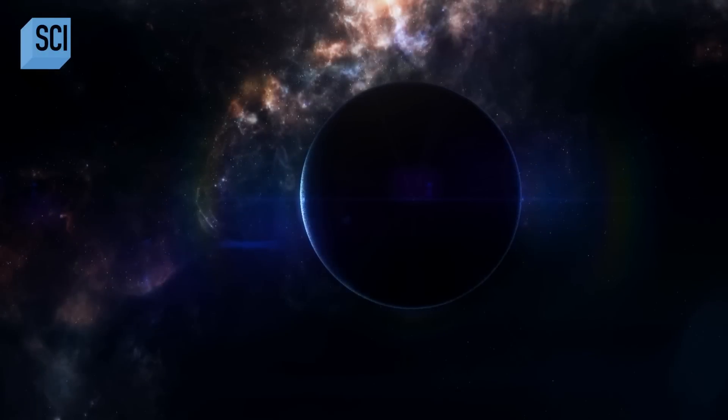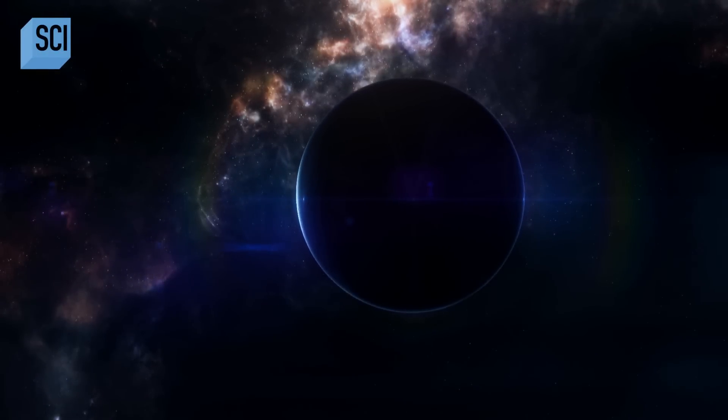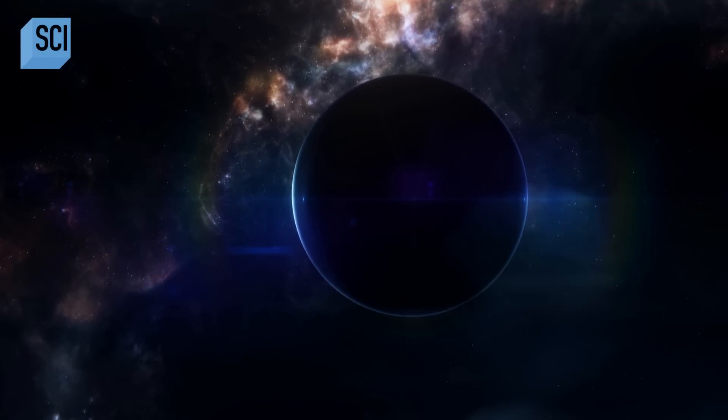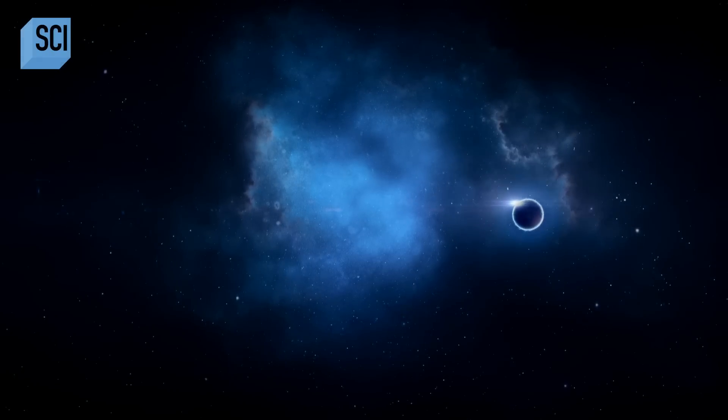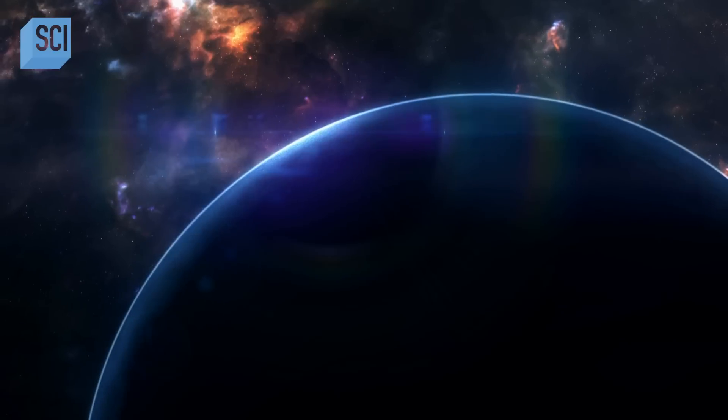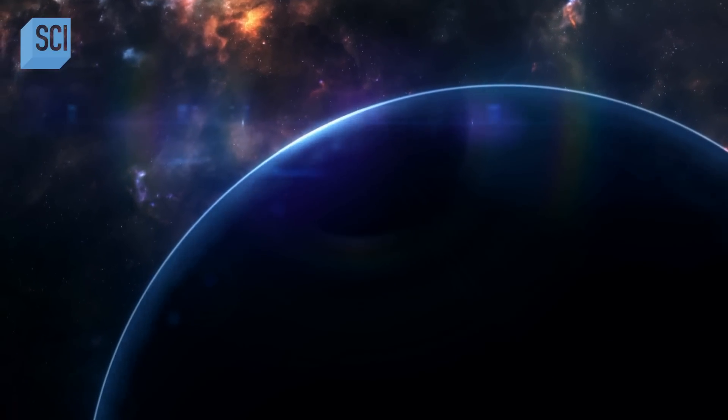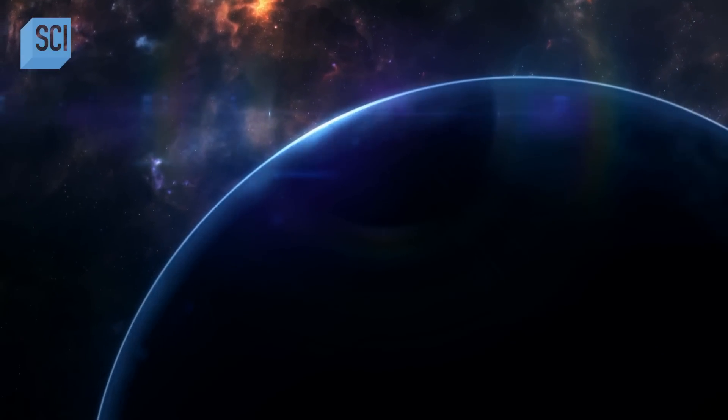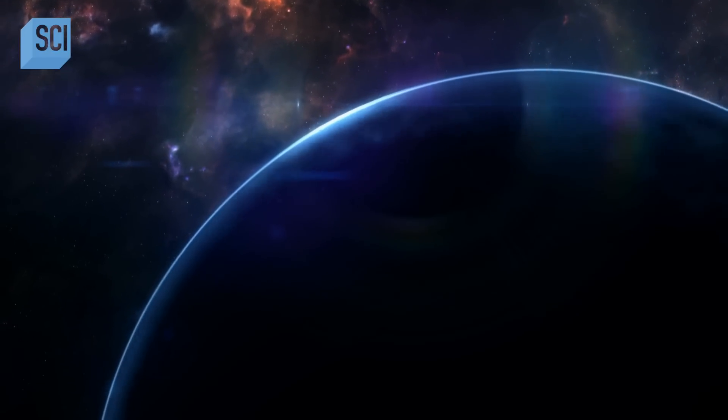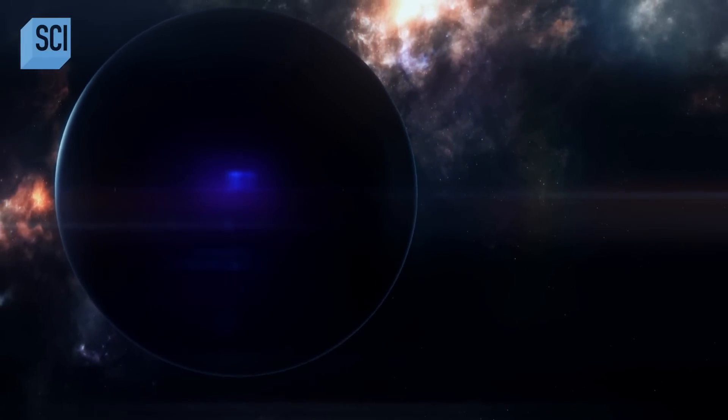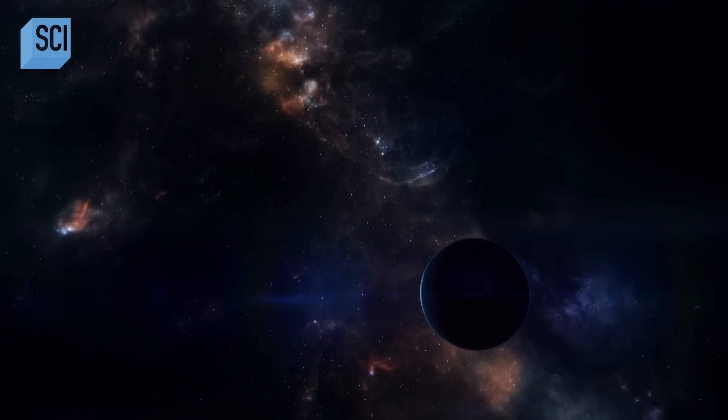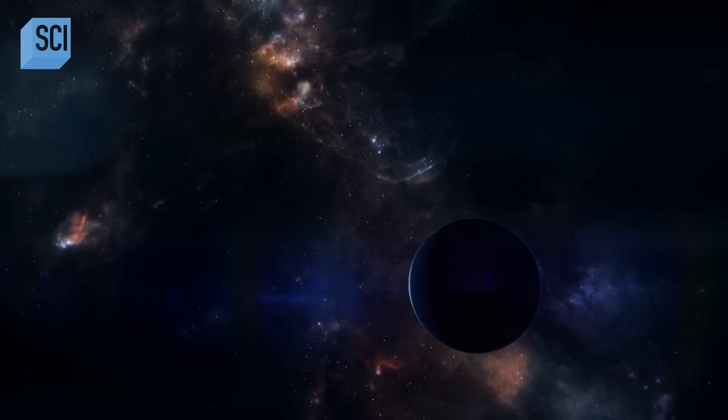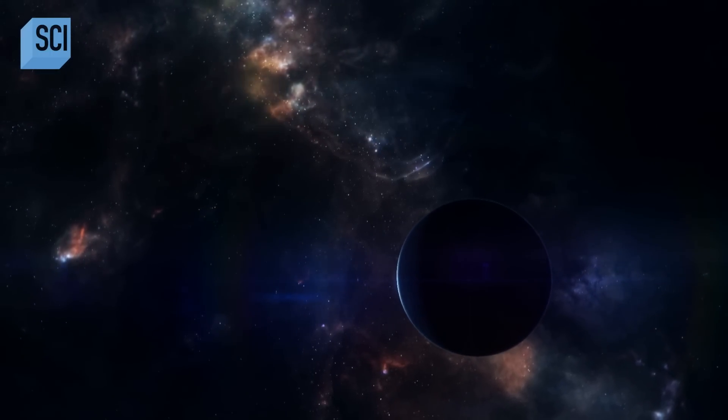A gravistar is what scientists call an exotic compact object. This bizarre theoretical body has exactly the same mass and gravitational pull as a black hole, but it's made of exotic matter. A gravistar would be impossible to see with the naked eye, but because it forms differently than a black hole, it has a strange, incredibly dense surface.